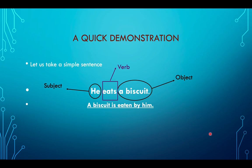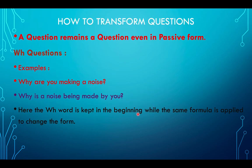Coming back to the demonstration — we used 'by' here because 'by' was the fitting preposition. But the preposition can change: for example, 'I know him' becomes 'He is known to me' — not 'by me'. So 'he is known to me' is correct. The preposition can sometimes change; check it according to the sentence. Now let us address the major point of confusion in students' minds.